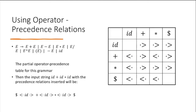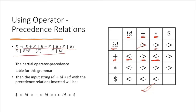For example, between ID and plus: ID has higher precedence, so we write greater-than. ID will have higher precedence than any of the operators. For plus and plus: either one could be higher. For plus and multiplication: multiplication has higher precedence. The precedence relations are maintained in a table.